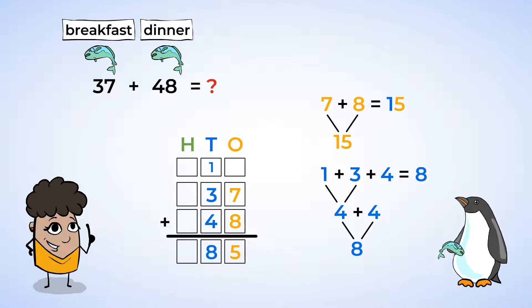Here it is! 37 plus 48 equals 85. Great job! At this aquarium, a penguin eats 85 fish a day. That's a lot of fish!